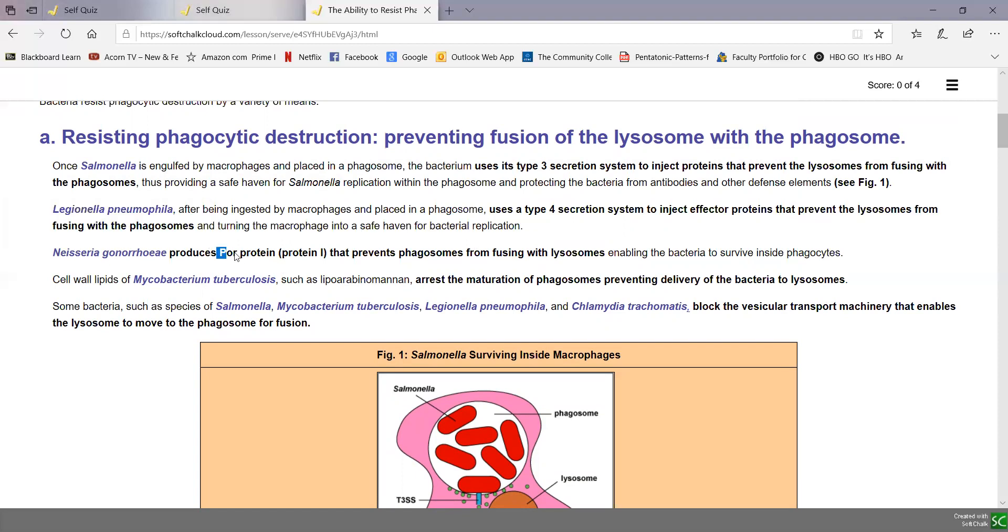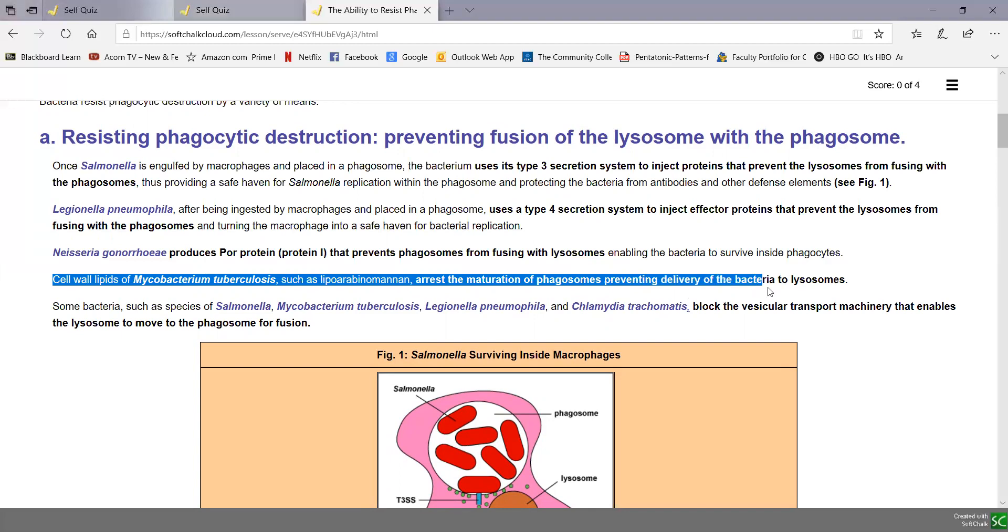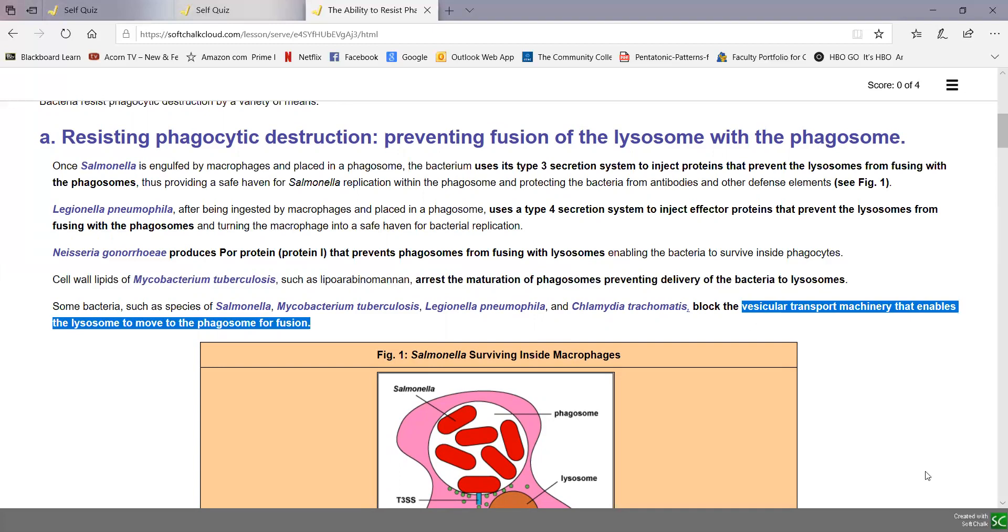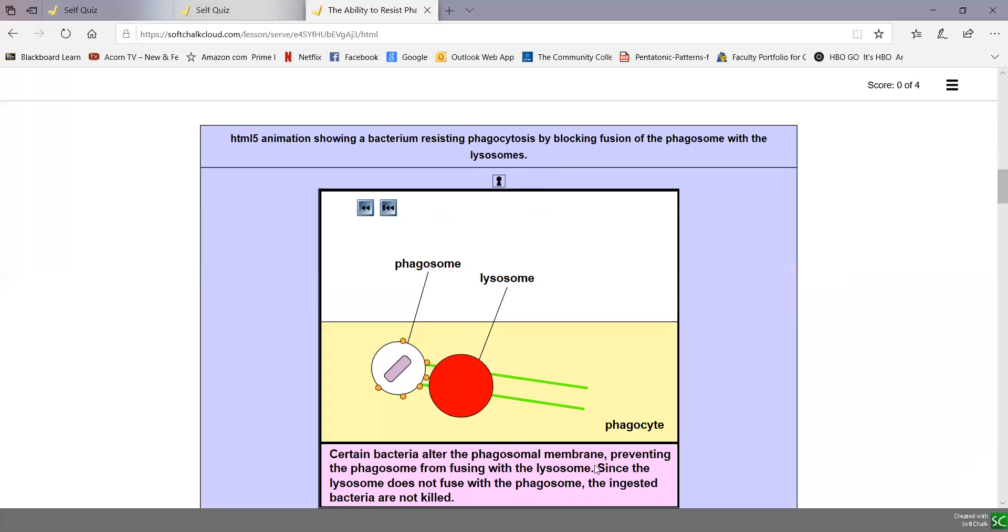Cell wall lipids of Mycobacterium tuberculosis arrest the maturation of the phagosome and prevents the delivery of the lysosomes. A few bacteria, like Salmonella, Mycobacterium tuberculosis, Legionella pneumophila, and Chlamydia trachomatis, can also block the vesicular transport machinery that enables the lysosome to move to the phagosome.